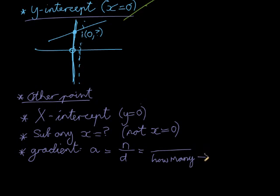And the numerator tells me how many steps up or down. And it will be up if it's positive, and it will be down if it's negative. Now I'll look at that in just a minute, so let's go and look at the example.